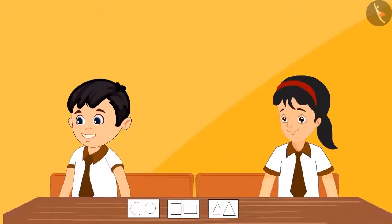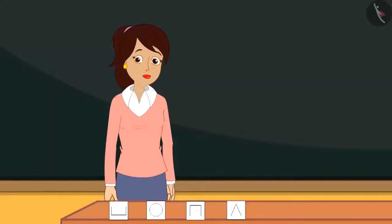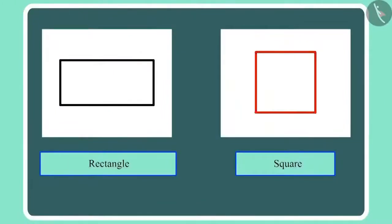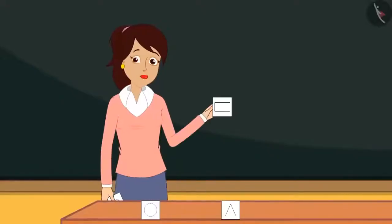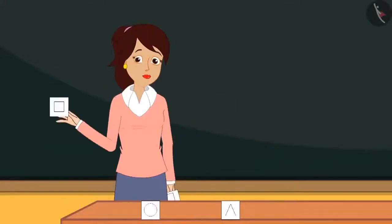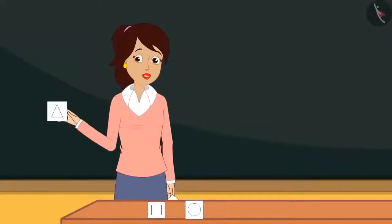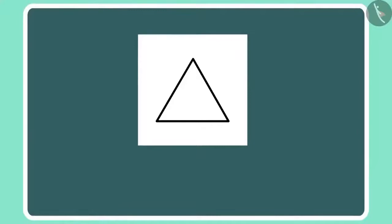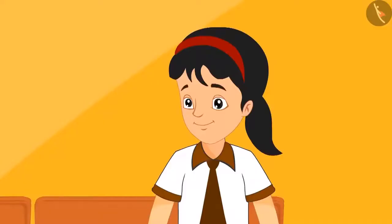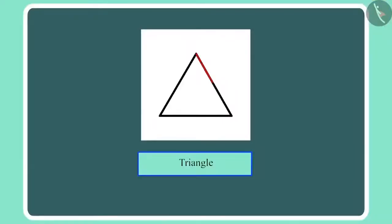Chotu asked, 'Ma'am, what is the difference between square and rectangle? Both these shapes are made of four lines.' The teacher explained: 'This shape is made of four lines of the same length — that's why we call it a square. And in this shape, all four lines are not equal; only opposite lines are equal, and adjacent lines are different in length — we call this a rectangle.' Then showing another shape, the teacher said, 'We call this a triangle, because this shape is made of three lines.' Pinky confirmed she understood, and the teacher agreed the other three-sided shape is also a triangle.